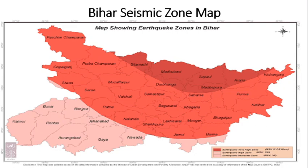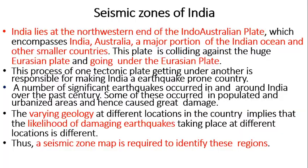The seismic zone map of Bihar shows three zones: zone 5, zone 4, and zone 2. Earthquakes in India are caused by the Indo-Australian plate — consisting of India and Australia — colliding against the Eurasian plate, resulting in the formation of the Himalayan mountain ranges. This is the major reason India is an earthquake zone. One well-known earthquake is the Bhuj earthquake in Gujarat, near Rann of Kutch, where tectonic plate activity released a huge amount of energy, causing large loss of life and property.